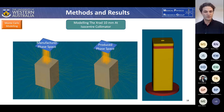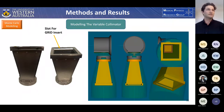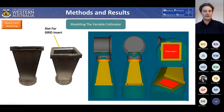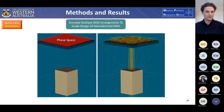Following this, the fine-tuned source and X-ray geometry parameters were used for the rest of the project. The next step was to model the variable collimator, which is where the grid insert would sit — you can see there is a slot where the grid insert fits. To simulate the various grid arrangements, a phase space was scored directly above where the grid would sit. This allowed placing that phase space above various grid inserts and simulating on a block of water, saving time by not having to simulate the X-ray tube particles every time the grid arrangement was changed.